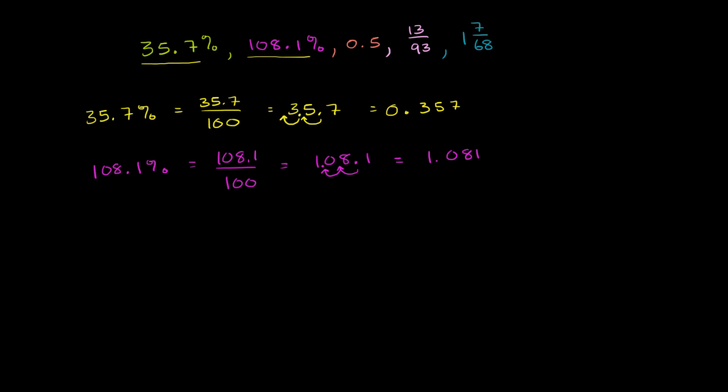But now we have them both in decimals. This 0.5 is already in a decimal, we don't have to convert it. Then we have 13 90-thirds, or 13 over 93. The easiest way to convert this to a decimal is literally perform the division. 13 90-thirds is the same thing as 13 divided by 93. This number is going to be smaller than 1, since 13 is smaller than 93.